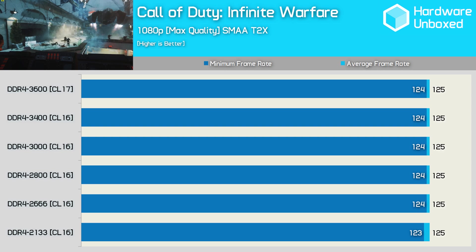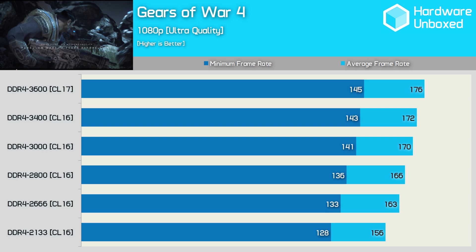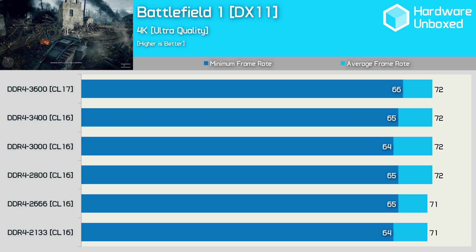The last game tested was Gears of War 4, which is known to be very demanding on the CPU. Here we see a reasonable 13% boost in performance when going from DDR4 2133 to DDR4 3600. Still, I was using a Titan XP at 1080p, so you have to wonder what the gains would be like under more realistic conditions.